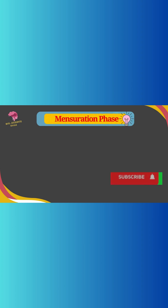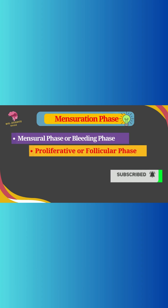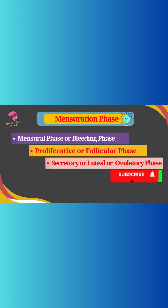The menstruation cycle involves three phases: the menstrual phase or bleeding phase, the proliferative or follicular phase, and the secretory or luteal or ovulatory phase.